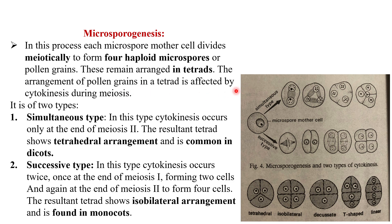The arrangement of pollen grains in the tetrad is affected by cytokinesis during meiosis and is of two types. In the simultaneous type, cytokinesis occurs only at the end of meiosis II, resulting in a tetrahedral arrangement, common in dicots. In the successive type, cytokinesis occurs twice — at the end of meiosis I and meiosis II — resulting in an isobilateral arrangement, common in monocots. The most common tetrad type is tetrahedral.